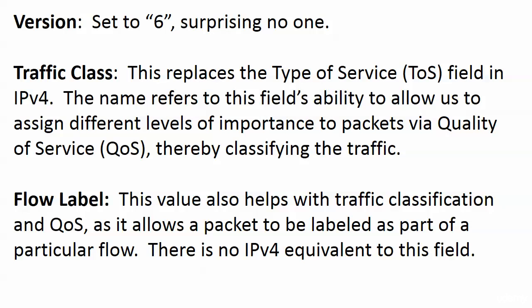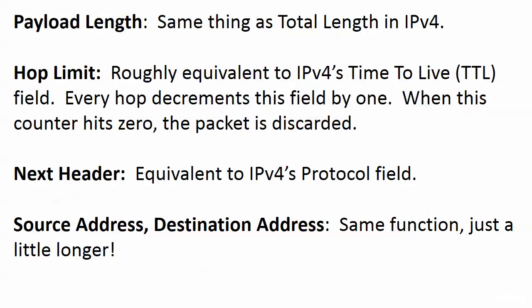That new field is flow label - there is no equivalent in version 4. Version - surprising no one - is set to 6. Traffic class replaces the TOS (type of service) field from version 4 and allows assigning different levels of importance to packets via QoS, helping classify traffic. Flow label assists traffic class by allowing a packet to be labeled as part of a particular flow. Payload length is the same as total length in version 4.